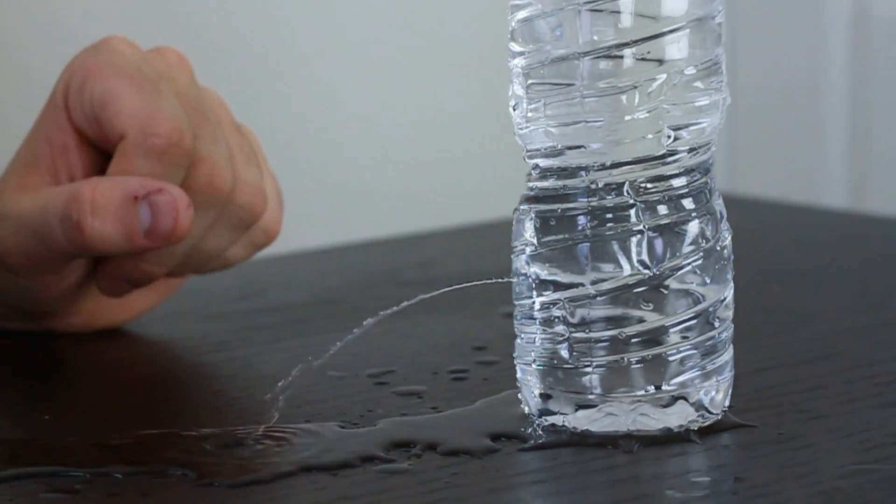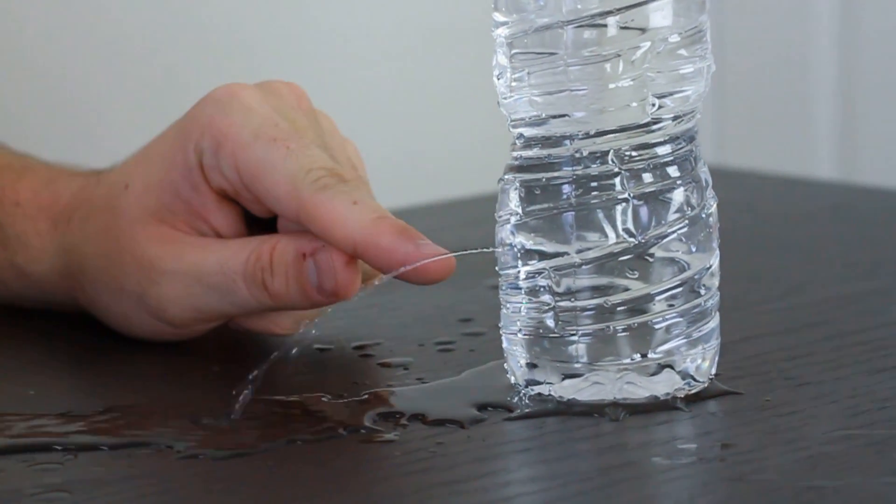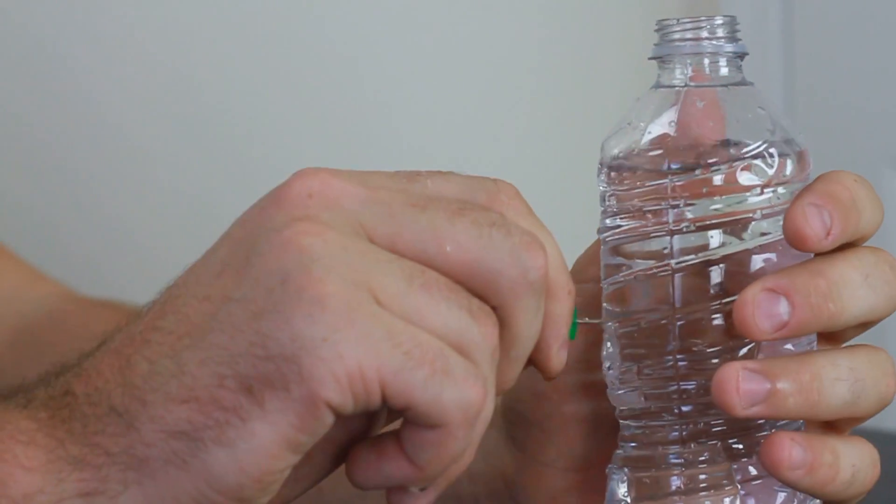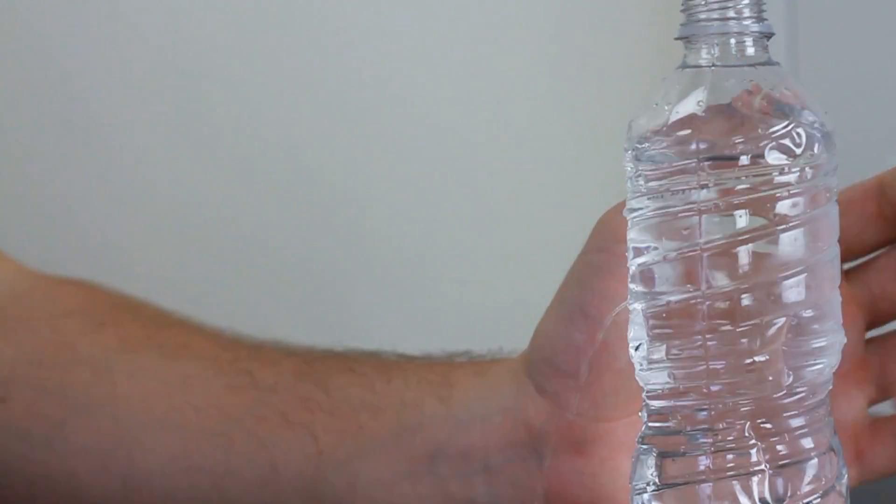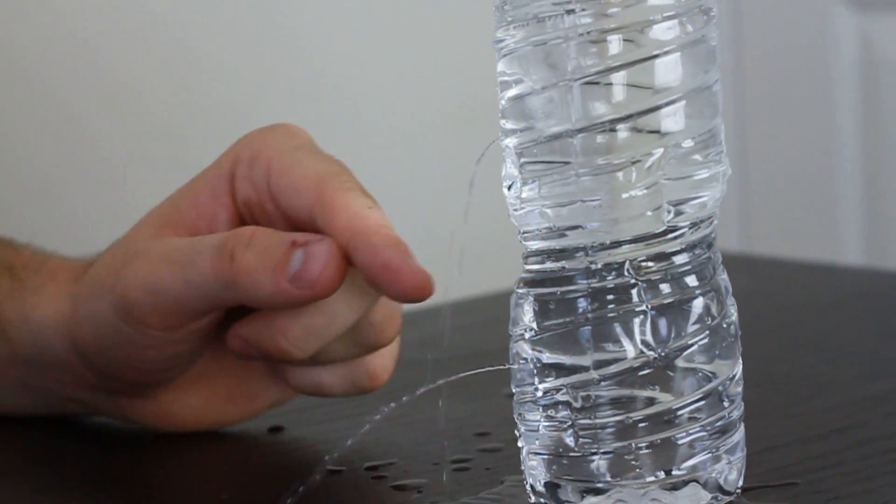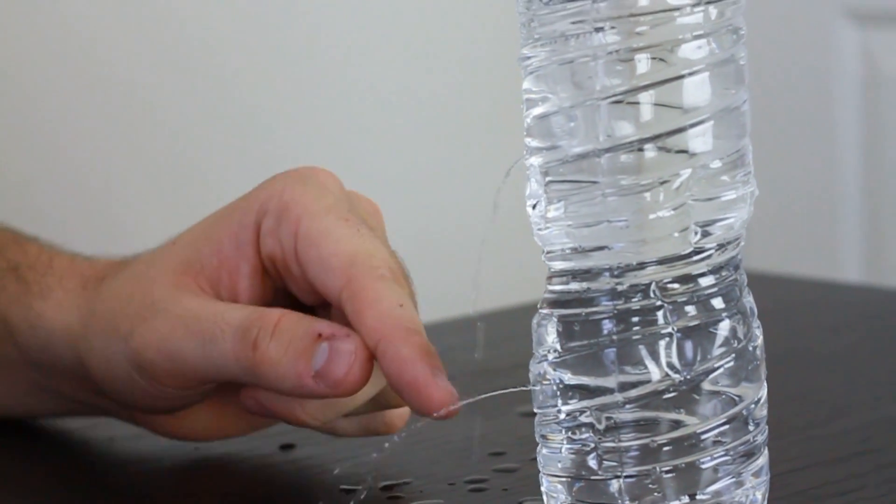Alright, the question is why does the water leak out only from the bottom, but not from this too? Even if I make another hole. You see why does it leak out? This one is going far and this one comes like a little bit.